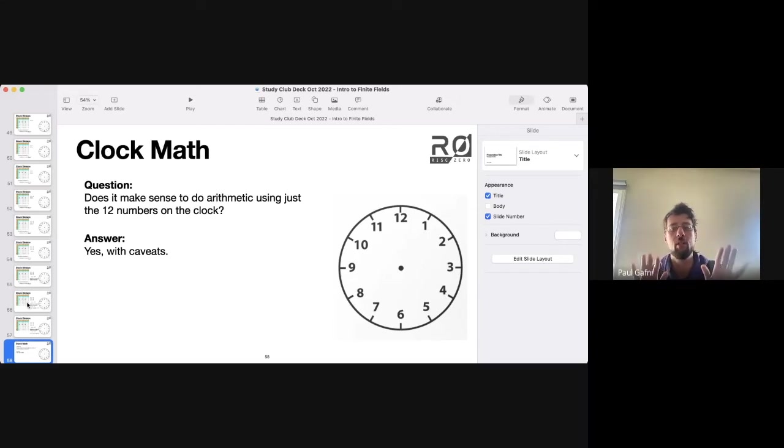This distinction is the distinction between a ring and a field. What we've been talking about so far is ring arithmetic. And if we want to be talking about field arithmetic, we need division to work cleanly.